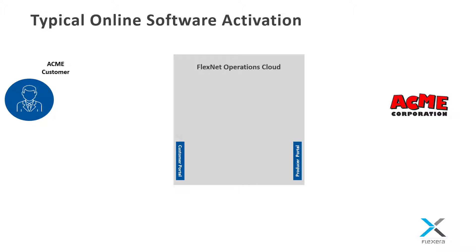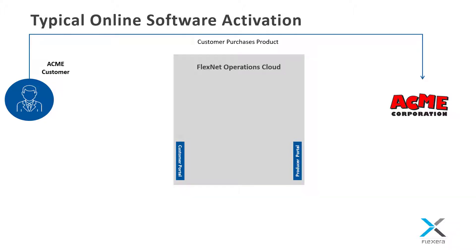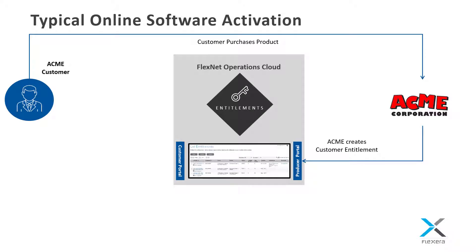To set the stage, let's take a look at a typical software purchase and activation process at a high level. First, the customer purchases a licensed product from the software provider, which in this case is the Acme Corporation. Acme will then create an entitlement for the customer in FlexNet Operations. In a production environment, this is typically accomplished programmatically via back office integration; however, we'll be entering the information manually in the administrative web portal. The customer is then notified of their purchase via an email which contains an activation ID that will be used to obtain a license.